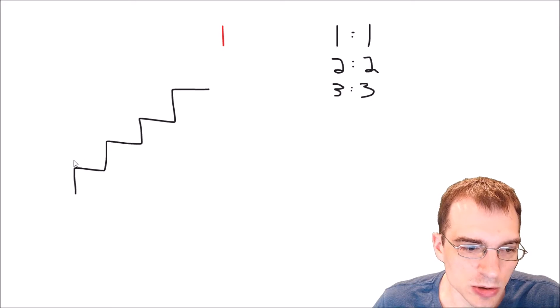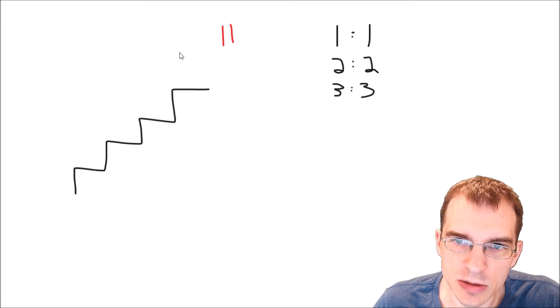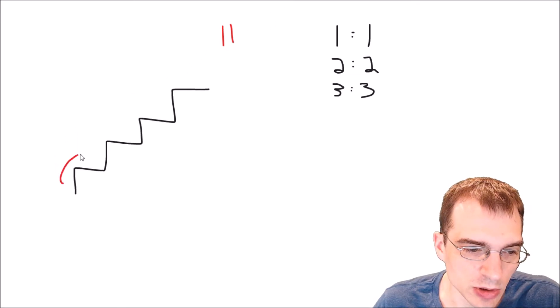We could also do two, two. That's two ways to get to the top. And then we have various combinations of one and two steps. So we could do one, two, one. That's three ways.